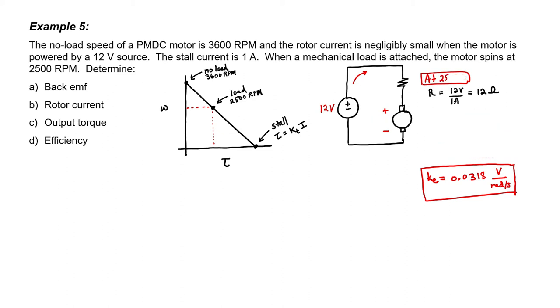Let's now look at the situation at 2500 rpm. We don't know either the back EMF or the current at this point. However, because I know the back EMF constant, I should be able to calculate the back EMF. Converting everything to SI units, I now have the back EMF at our load point.